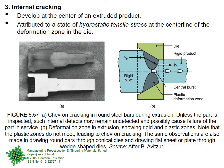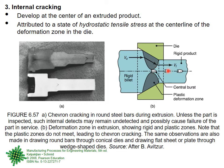We were discussing the internal tracking defect. It develops at the center of an extruded product, attributed to a state of hydrostatic tensile stress at the center line of the deformation zone in the die. The metal is flowing like this, and sometimes because of imbalances of forces right here on the center line, small defects develop — small cracks — and later because of high forces and pressures, some of these cracks can burst.